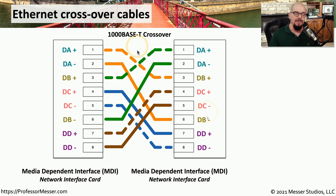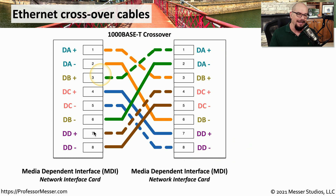There are many books and websites that will tell you a crossover cable is 568A on one side and 568B on the other. But as you can see, that isn't actually the case when you get into gigabit networking.